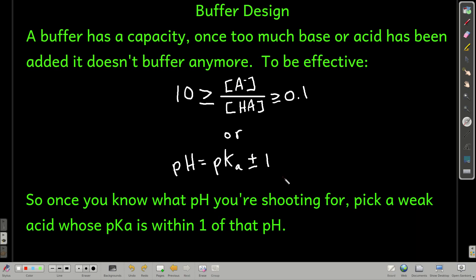Then you look for a weak acid whose pKa is within 1, as close as you can get really to that pH. And then what you do is you make up a solution that has the ratio of that acid to base that you want and it gives you that pH.